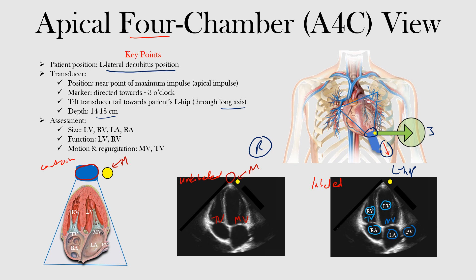We can assess, as the name implies, the four chambers: the size of the left atrium, right atrium, left ventricle, and right ventricle. We can also look at valve motion and whether there's any evidence of regurgitation at the mitral valve and the tricuspid valve between their respective chambers. We also want to note the pulmonary valve, which you may sometimes be able to catch on this view as well.